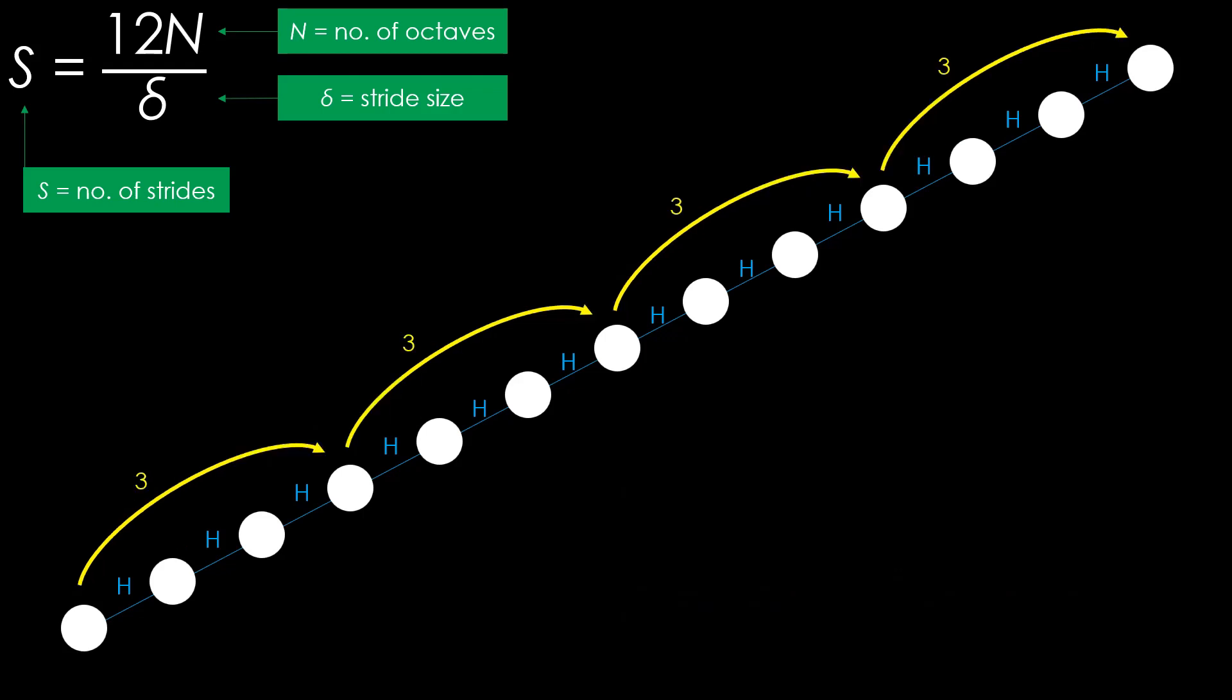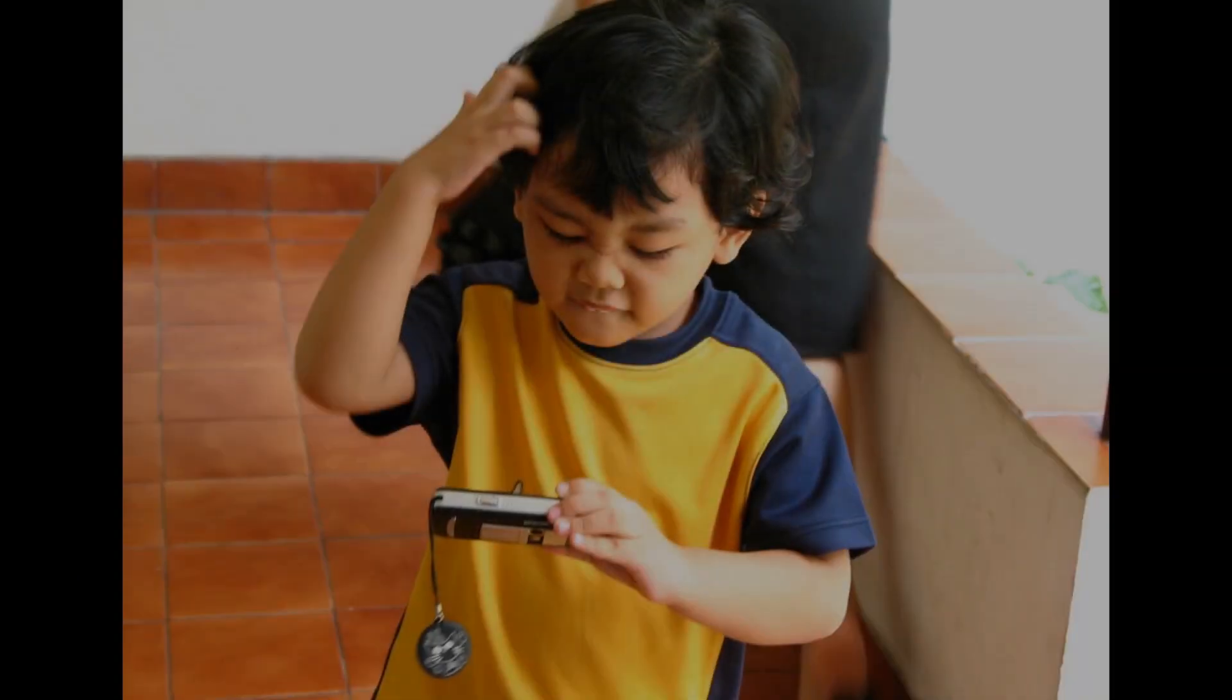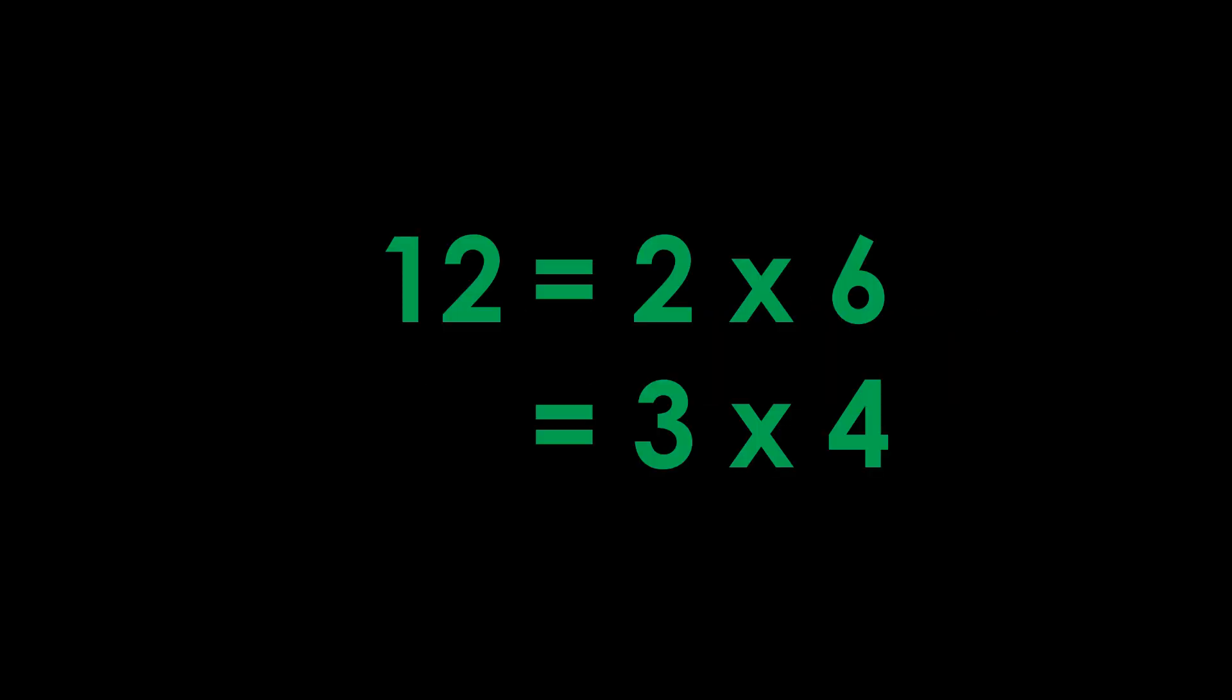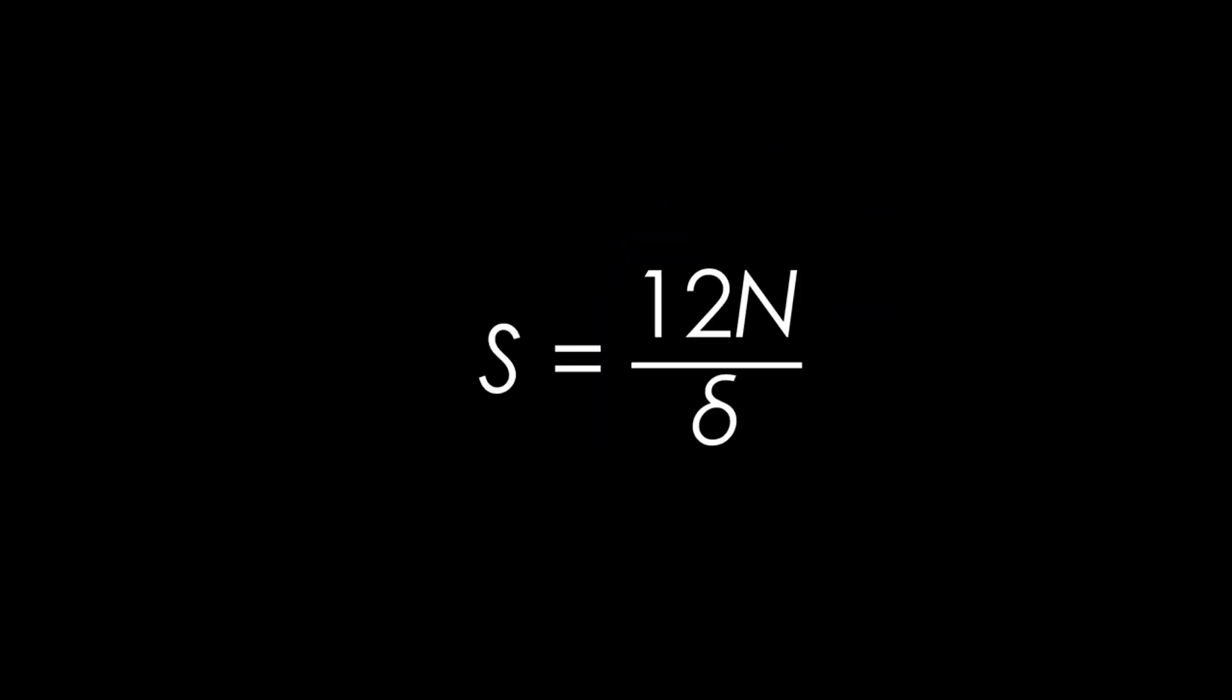For a stride size of 3, it takes only 4. Why is it so different for the case of the chromatic scale then? Well, that's because 12 is not prime. It is divisible by 2, 3, 4, and 6. So a stride size of any of the 4 factors of 12 will result in an s less than 12.